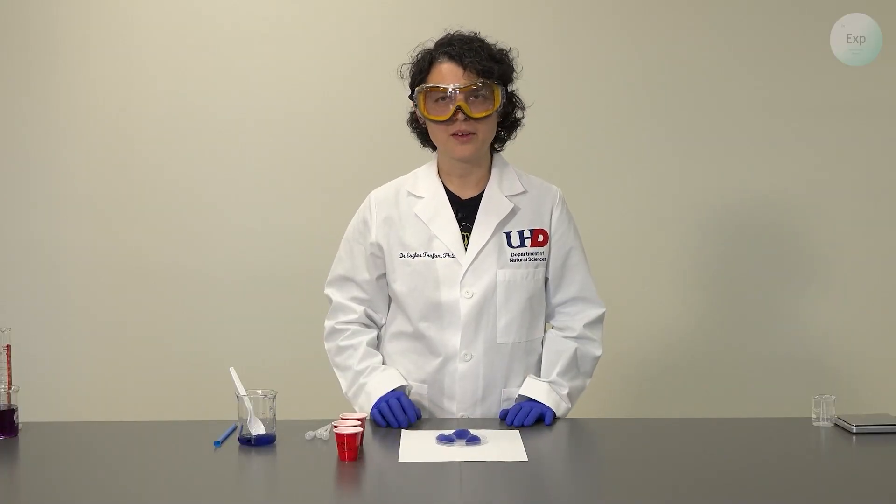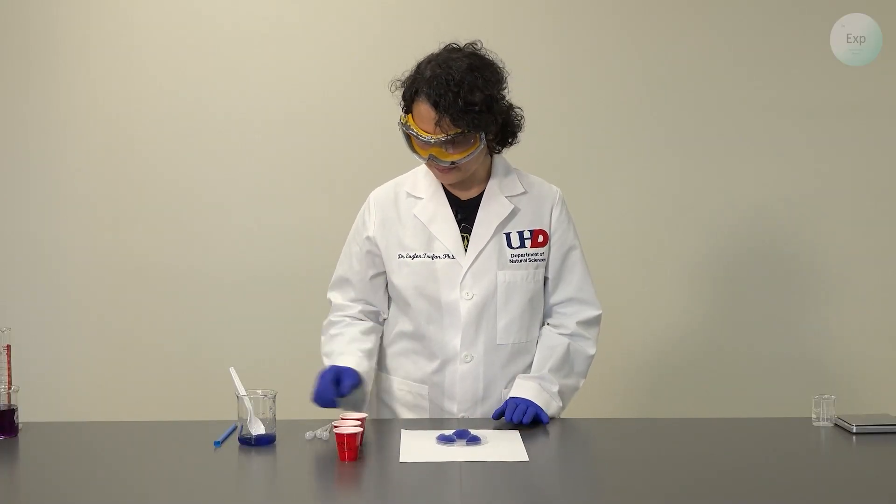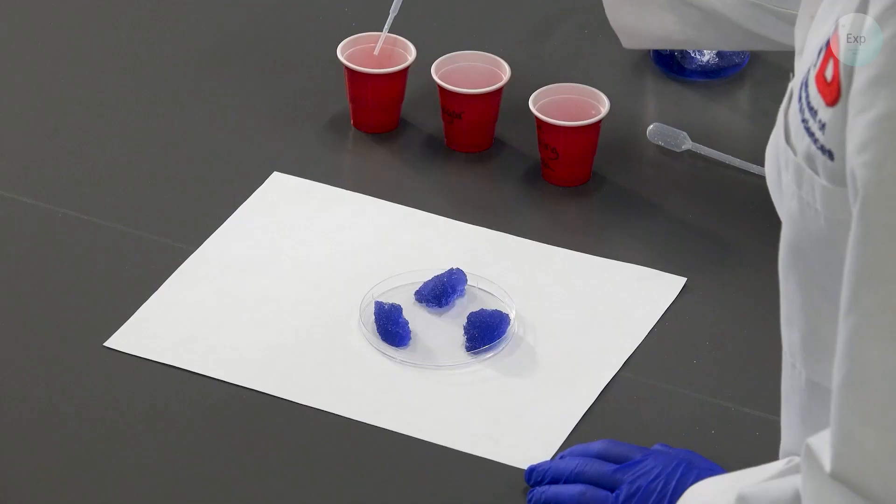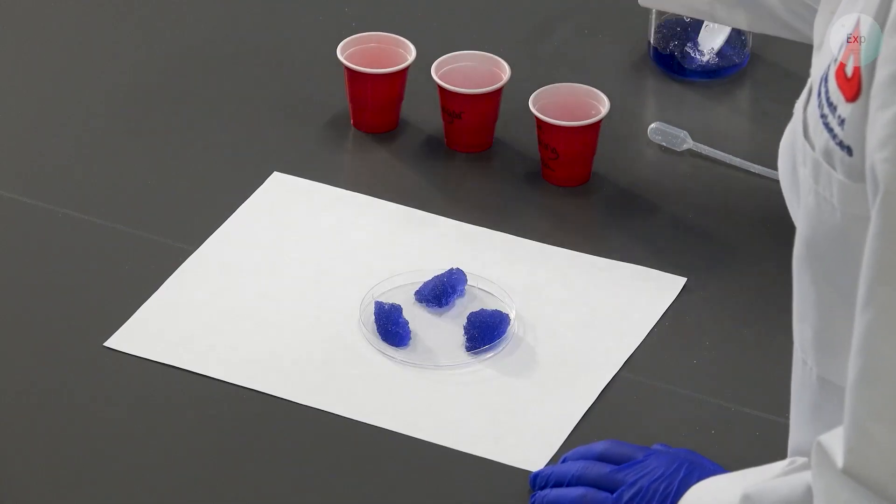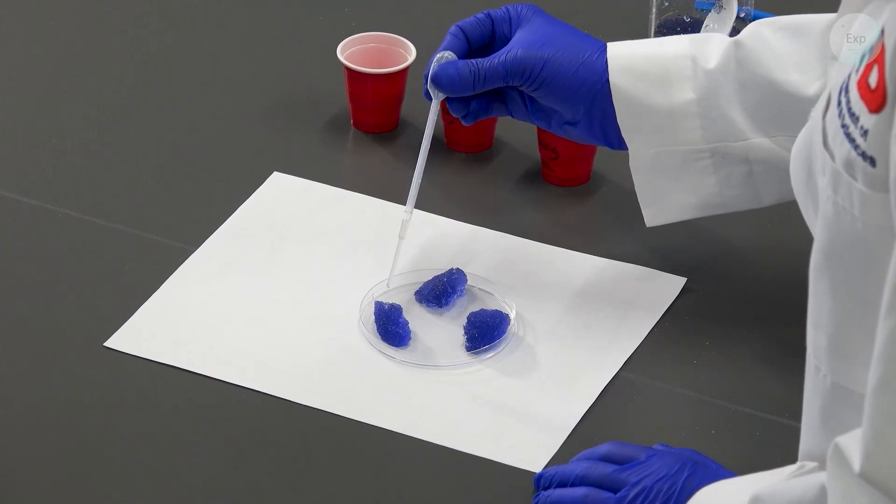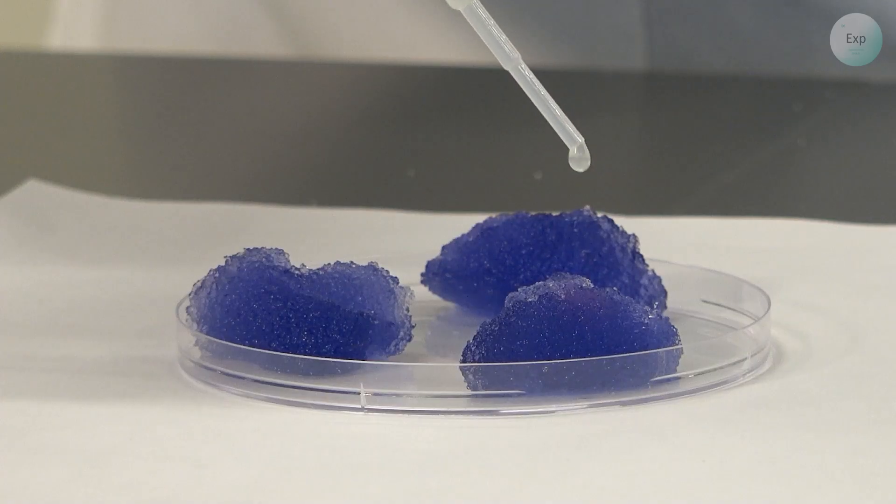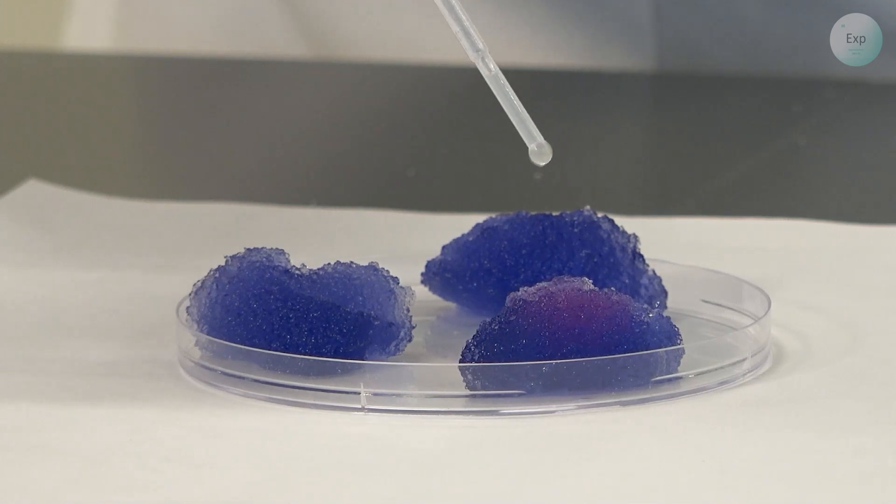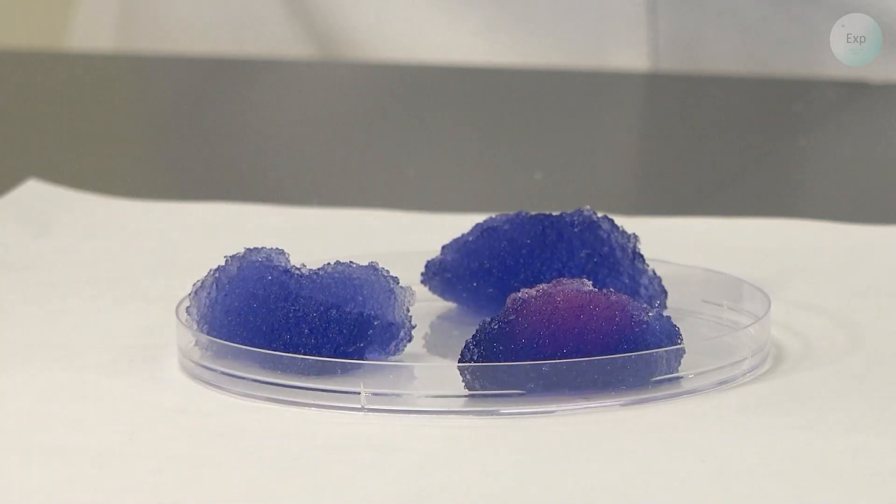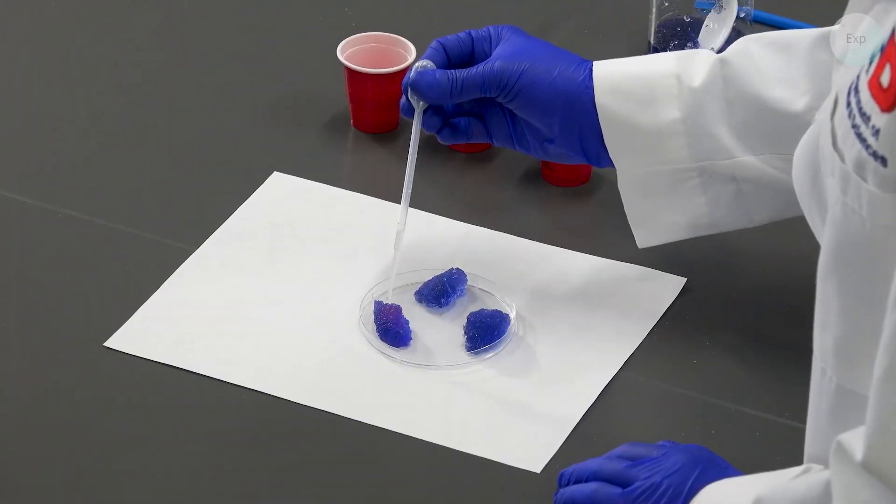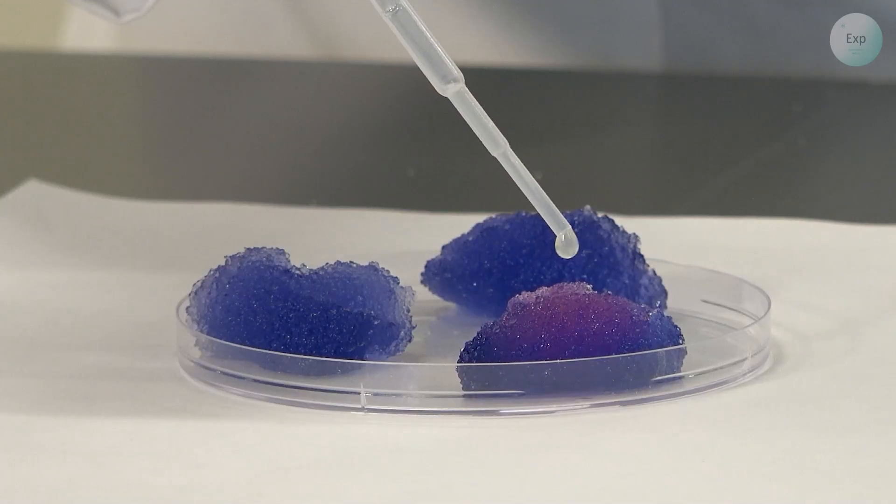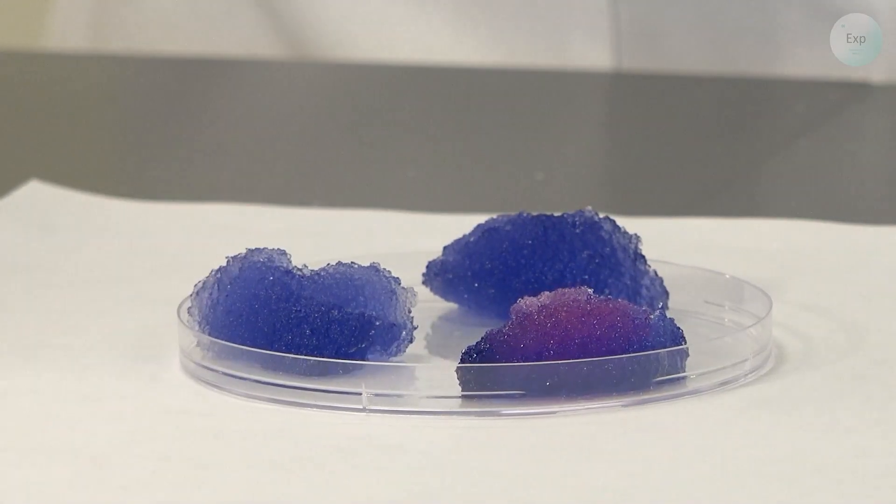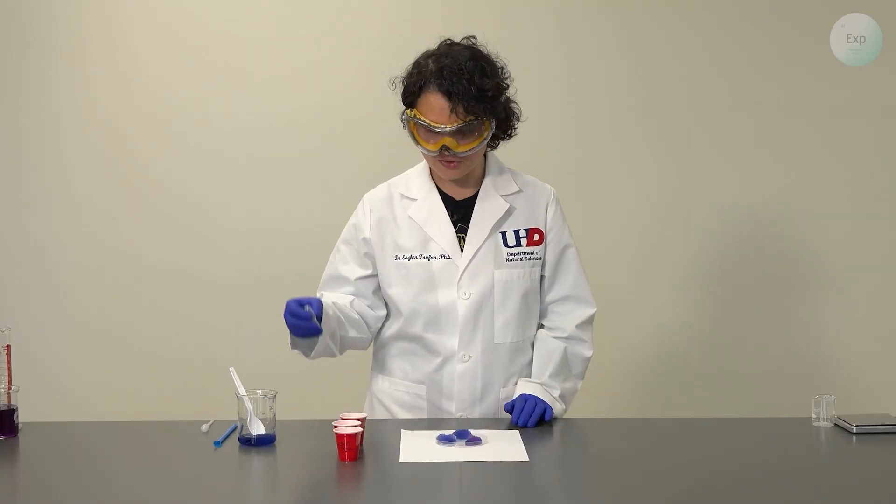And then to each mound we're going to add a drop of our chemical. First I'm going to add a drop of the lemon juice. And if that doesn't cause a color change, I can add a couple more drops. And now we can see we have achieved a color change.